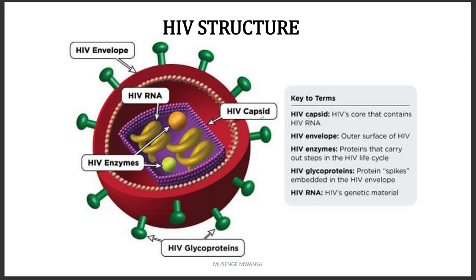That inner layer is called the capsid. The capsid is the core which contains HIV RNA and special enzymes. Just below the envelope, there is also a layer we call the protein matrix.